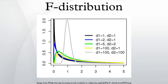The cumulative distribution function is where I is the regularized incomplete beta function.